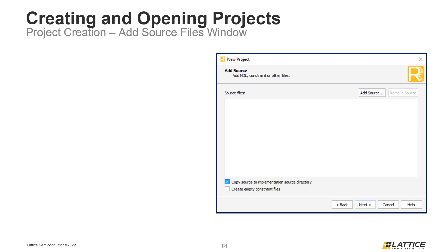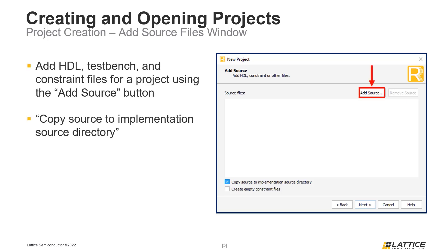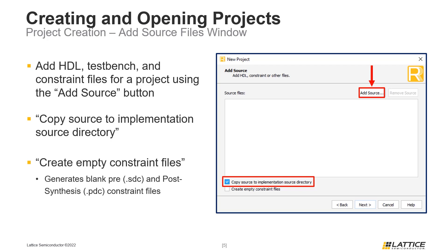The third page in the new project wizard is called Add Source. Here users can add files to begin their new project with using the Add Source button. To copy the files to the actual project, the Copy Source to Implementation Source Directory option should be checked. If unchecked, added files will only be referenced from their source location. There is also a Create Empty Constraint Files option, which generates blank pre and post synthesis constraint files. All selections on this page are optional, as files can be added after project creation. Click Next when finished.